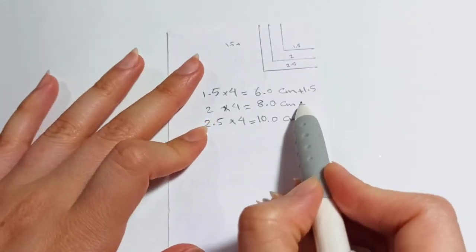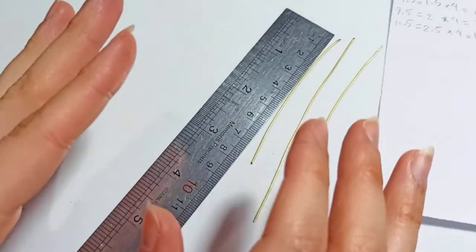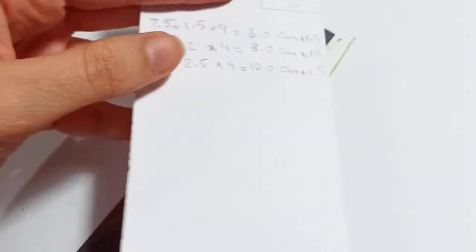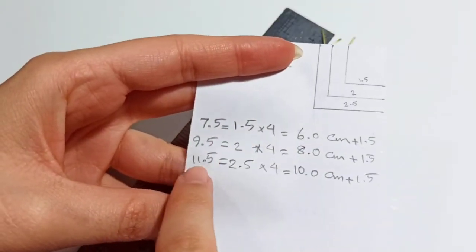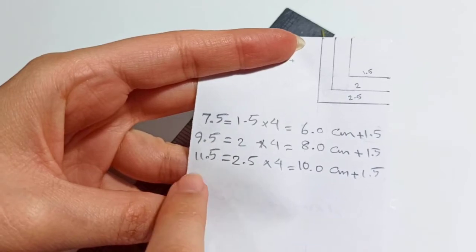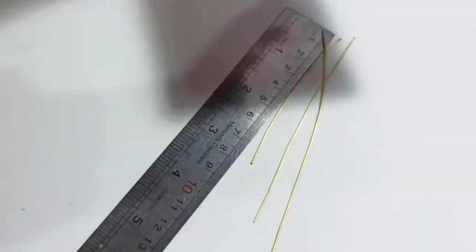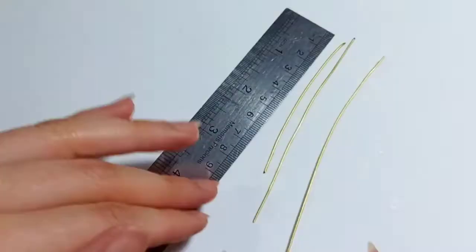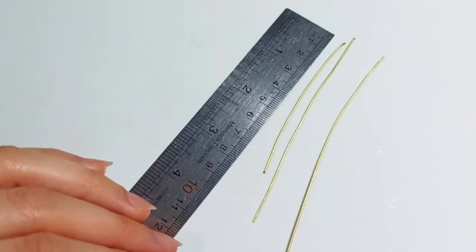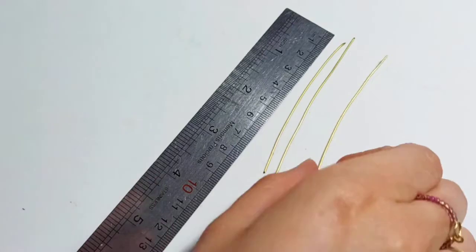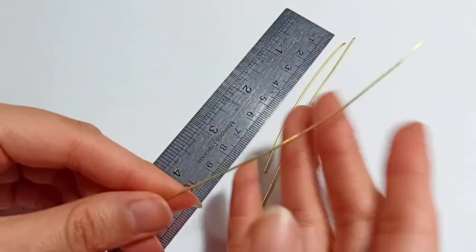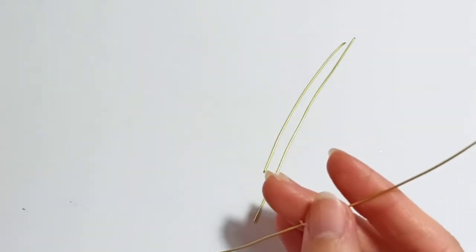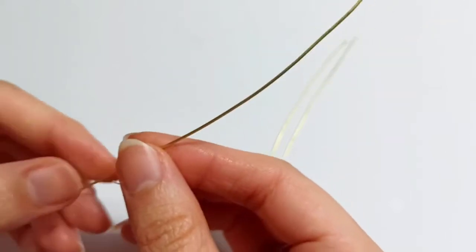We add 1.5 centimeters to these numbers, which is an approximate length for the hook and weaving parts. So we cut our wire in these three sizes: 7.5, 9.5, and 11.5 centimeters.